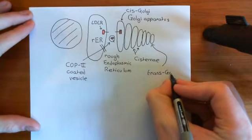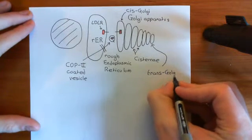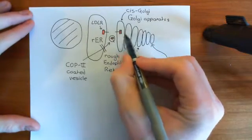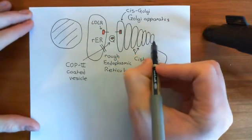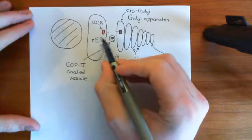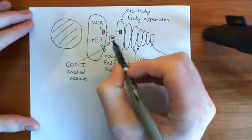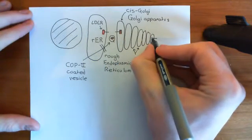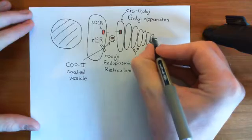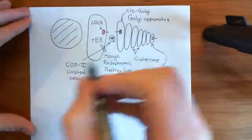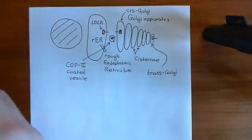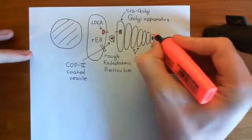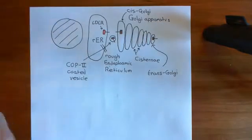Trans means on the opposite side, basically. So you're going to the opposite side of the Golgi that's away from the rough endoplasmic reticulum. The LDL receptor will make its way down through the Golgi, and as it does so it will get all sorts of modifications occurring to it.